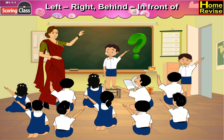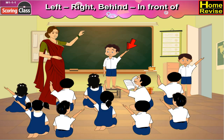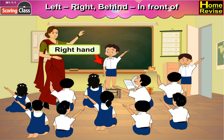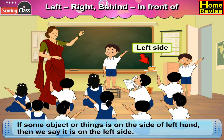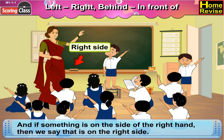Then tell me, the remaining two students raised which hand? Yes, they have raised their right hand. If we are facing this side, then the hand on this side is the left hand, and the hand on this side is the right hand. If some object or thing is on the side of the left hand, then we say it is on the left side. And if something is on the side of the right hand, then we say that it is on the right side.